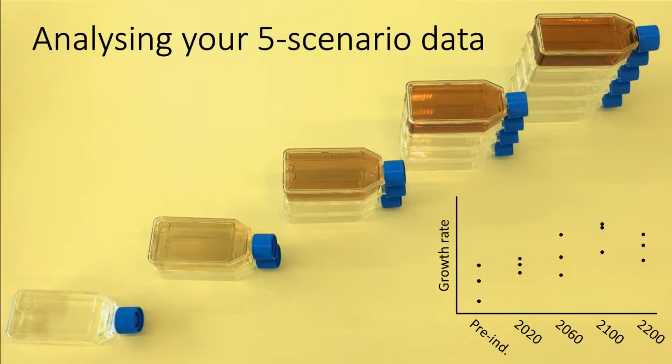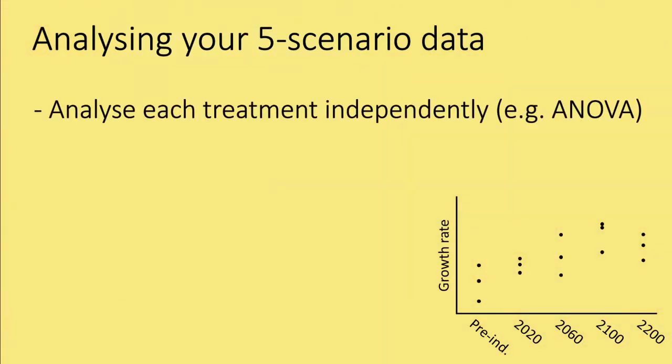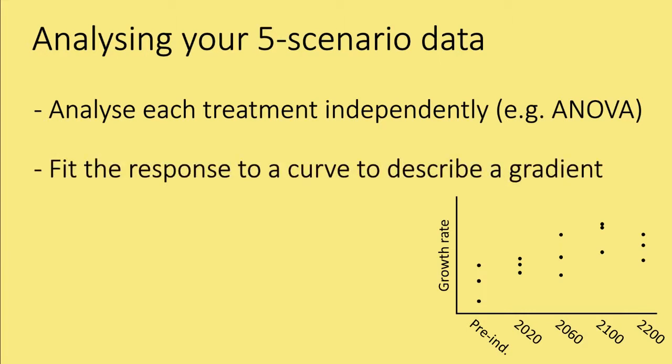Analyzing this data may be a bit more complex than our two-scenario approach. Once you collect your data, you have a few options. You can simply analyze each treatment level independently, as you would in an ANOVA. Or you might want to decide to fit the response to a curve, maybe a straight line, maybe a quadratic, or some kind of smoother like a GAM to describe your gradient. Your analysis approach will depend on the questions you want to answer. It will also determine how many replicates you need and what sorts of assumptions you're making.